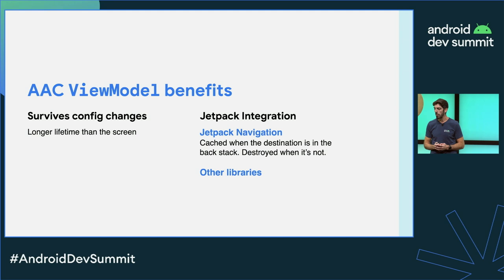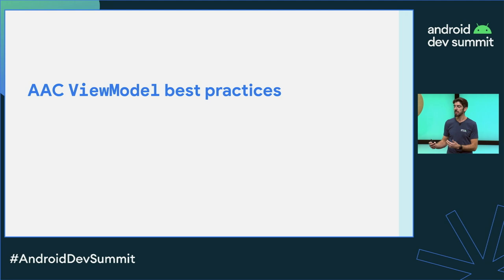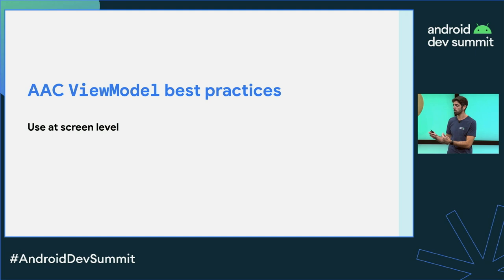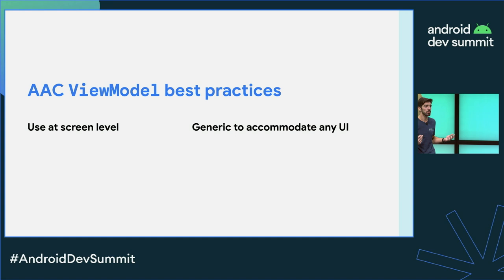ViewModels are really powerful, but we shouldn't overuse them. Use them at screen level — do not use them to manage the complexity of reusable UI elements like chip groups or forms, because you will get the same ViewModel instance across different UI elements used under the same scope. Also, ViewModels shouldn't know about the UI implementation details. They should be generic enough to accommodate any type of UI — a wearable, a tablet, or a Chromebook — so keep the API surface, the screen UI state, as generic as possible.